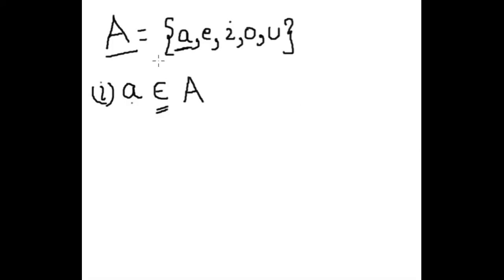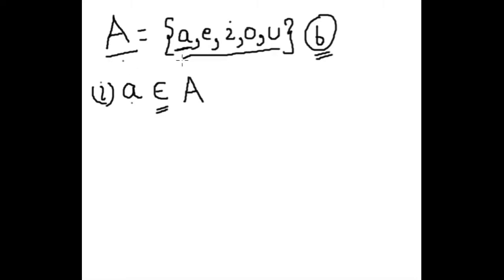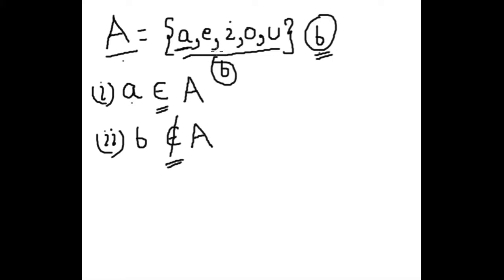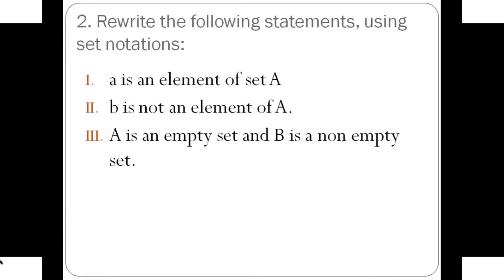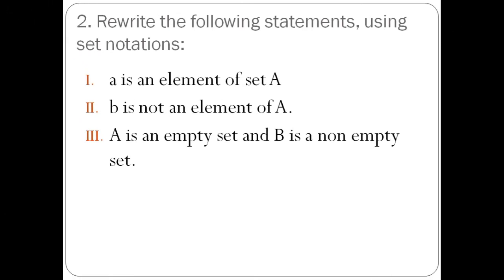Part (b): 'B is not an element of A'. Using the same example where A is a set of all vowels, we can see that B is not inside the bracket, so B is not a member of this set. We represent this as 'B ∉ A' — this is the sign of 'not an element of'. Because B is not inside this set, B is not an element of capital A.